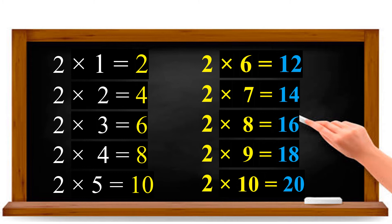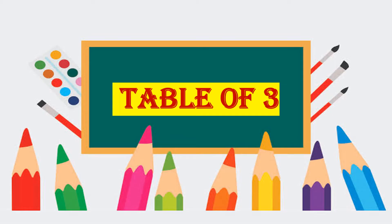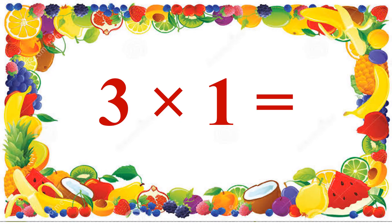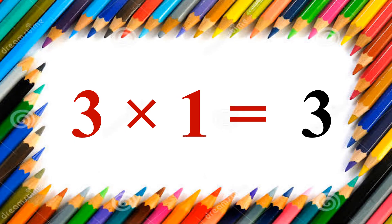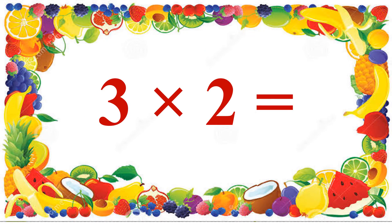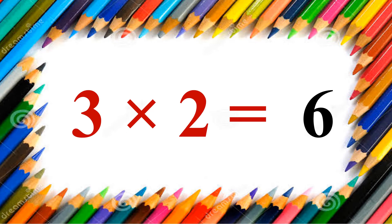Now we are going to see the 3 table. Table of 3. Shall we read the 3 table now? Yes. Read along with me. 3 ones are 3. 3 twos are 6.